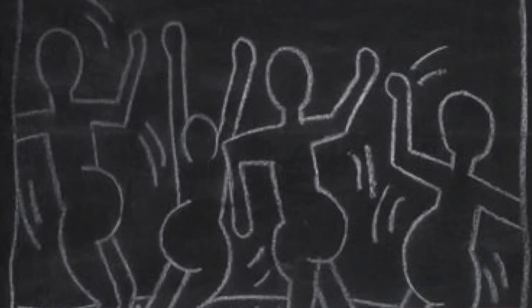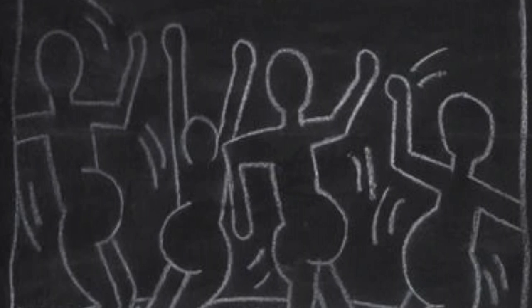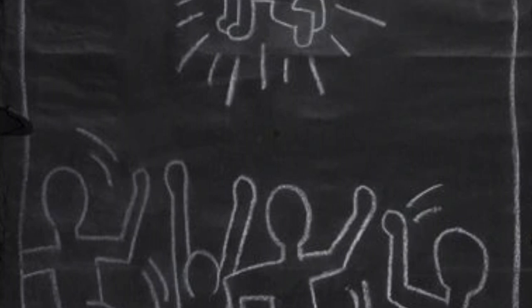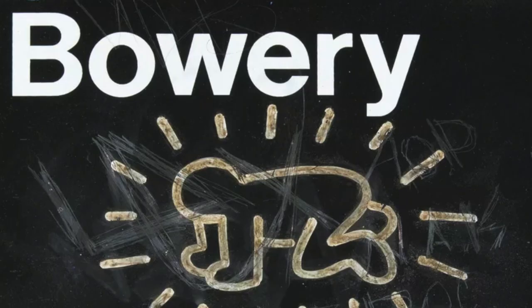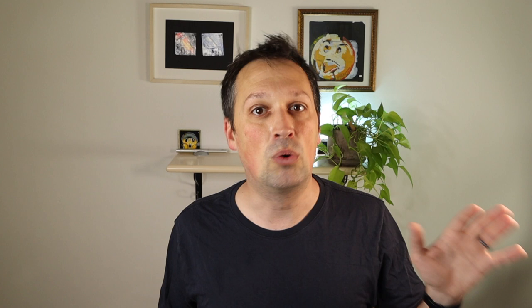His images take simple forms — they don't look realistic and they're not aiming for optical equivalency, nor are they making obscure references to art history. He once said: 'The drawings which I do have very little in common with drawings in the classical sense as they developed during the Renaissance, and the drawings that imitate life or make a lifelike impression. My drawings do not try to imitate life. They try to create life, to invent life.' His Radiant Baby, for example, is not trying to look like a real baby. Instead, it takes on all the symbolic associations of any baby: new life, innocence, vulnerability. By having the baby appear only in outline and crawling, it's easier to see the connection between the human figure and the animal figure painted below it on that fence, situating humanity among the animal world in a similar way that the images in Lascaux do.